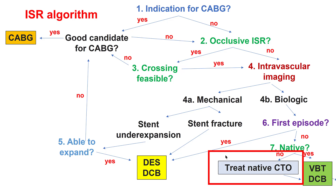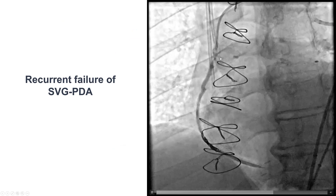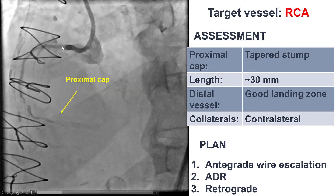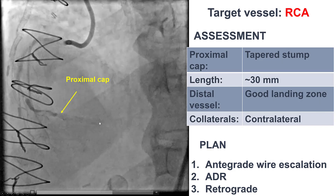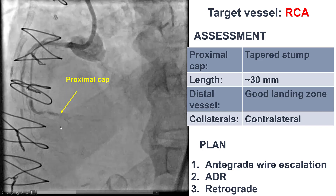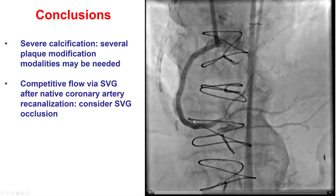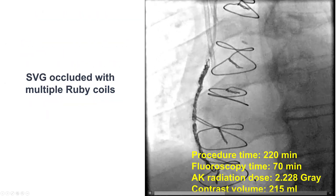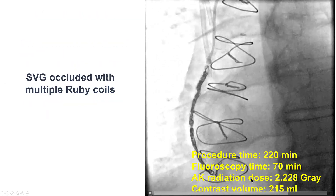If we have a saphenous vein graft with recurrent in-stent stenosis, the next question is whether we can treat the native coronary artery, which often is a CTO. This is an example of recurrent failure of a saphenous vein graft with multiple layers of stents. Recanalization of the native coronary artery can provide better long-term results, although it is difficult. Here there is diffuse disease and a distal CTO. This was successfully crossed, and then the saphenous vein graft was actually occluded since the vessel was now filling through the native right coronary artery.